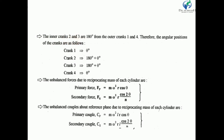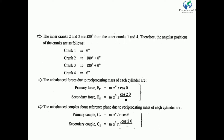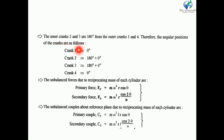The inner cranks 2 and 3 are 180 degrees from the outer cranks 1 and 4. We assume the initial condition where inner cranks make an angle of 180 degrees with outer cranks. If crank 1 makes an angle theta with the center line of cylinder 1, then the outer crank also makes the same angle theta, but the inner cranks make an angle of 180 degrees plus theta. So inner cranks have the same angle among themselves and outer cranks have the same angle among themselves.